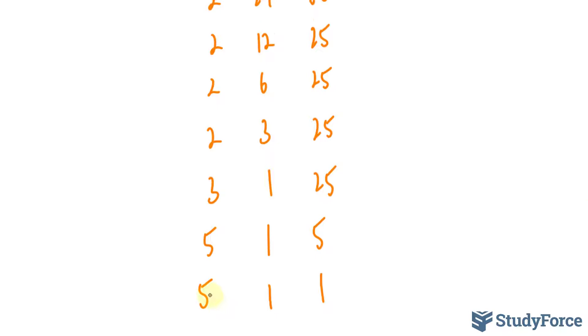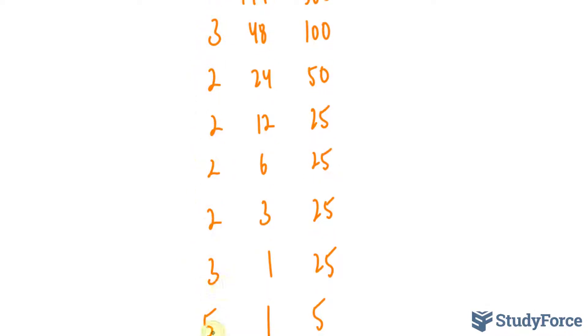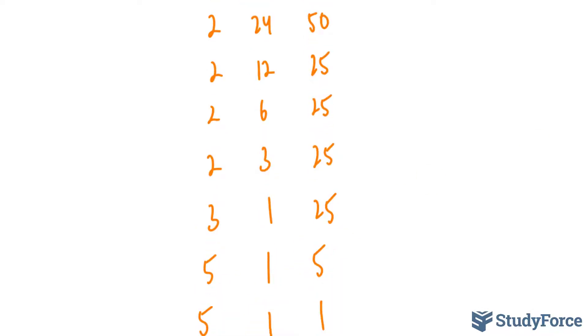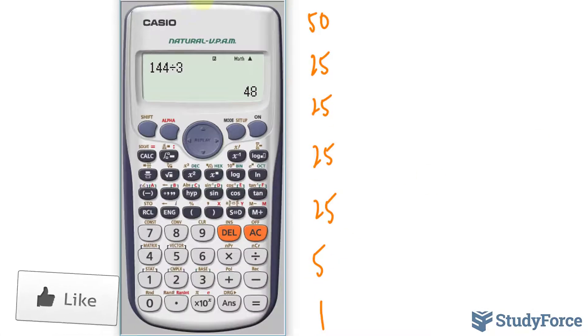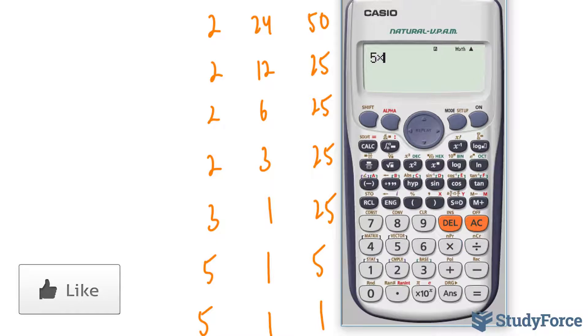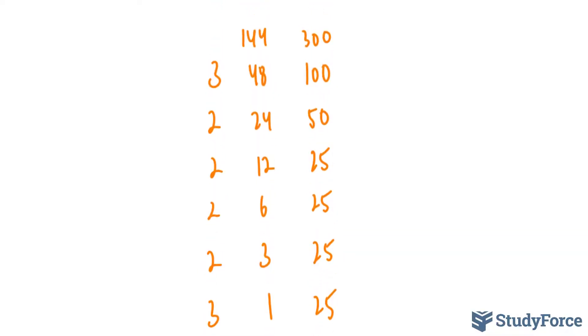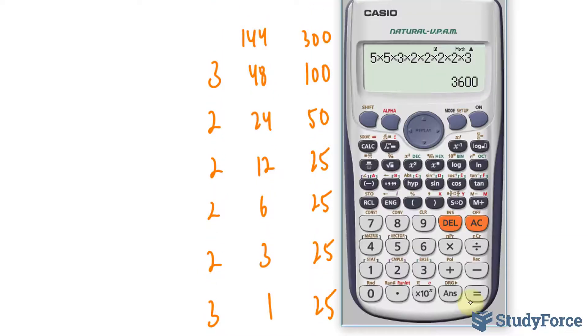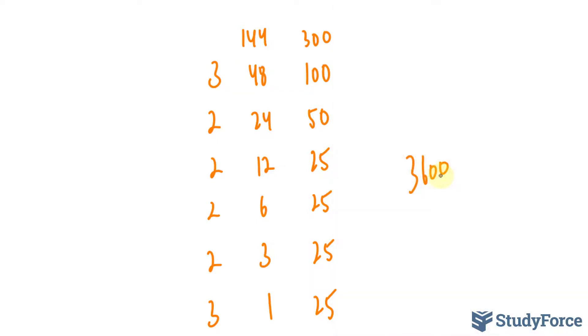Therefore, the least common multiple is all of these divisors multiplied together: three times two times two times two times two times three times five times five. That gives us 5 × 5 × 3 × 2 × 2 × 2 × 2 × 3, which equals 3,600. So the LCM of 144 and 300 is 3,600.